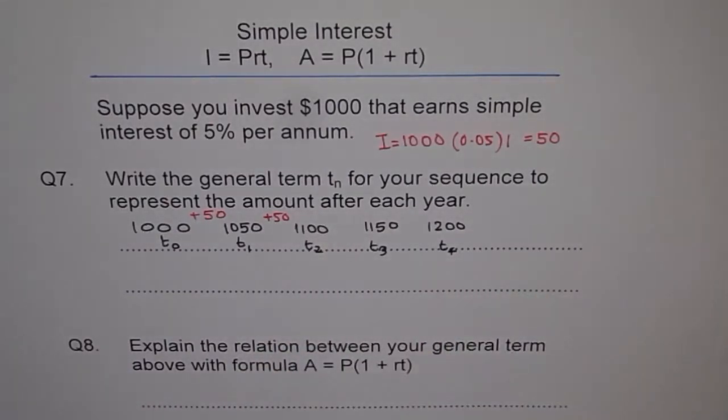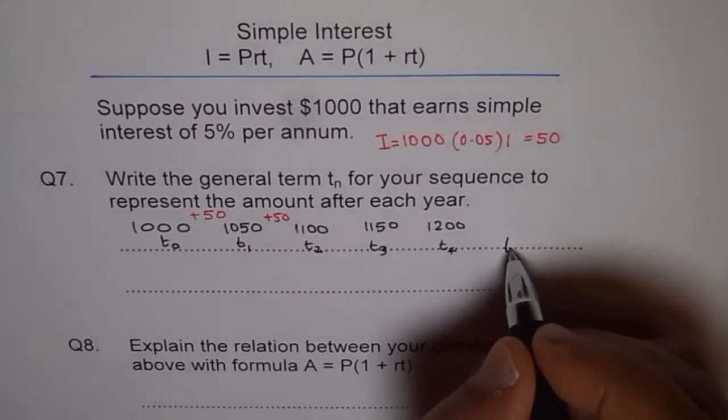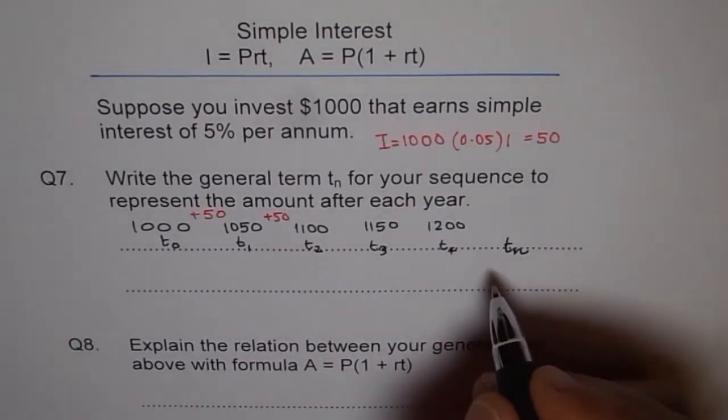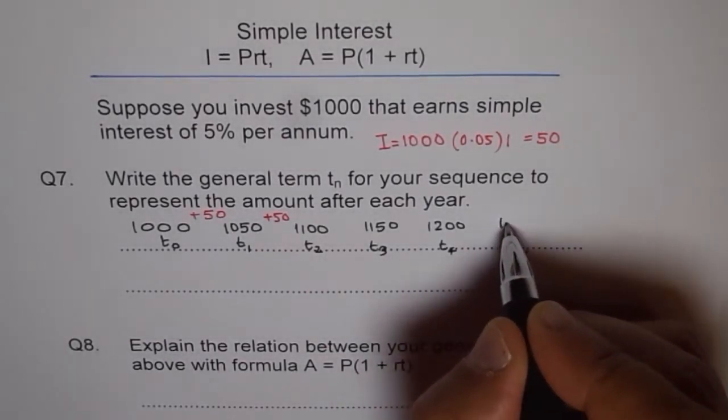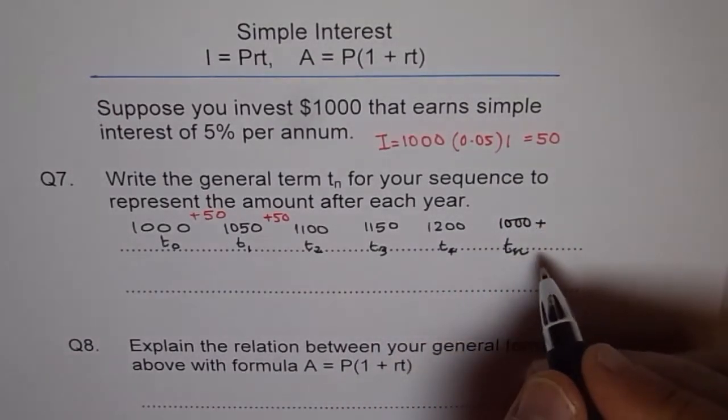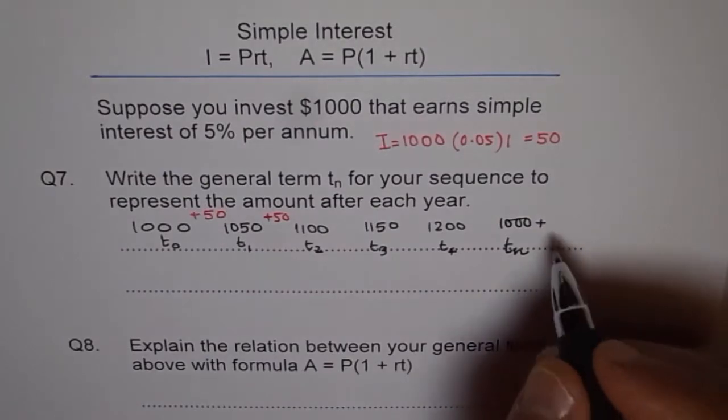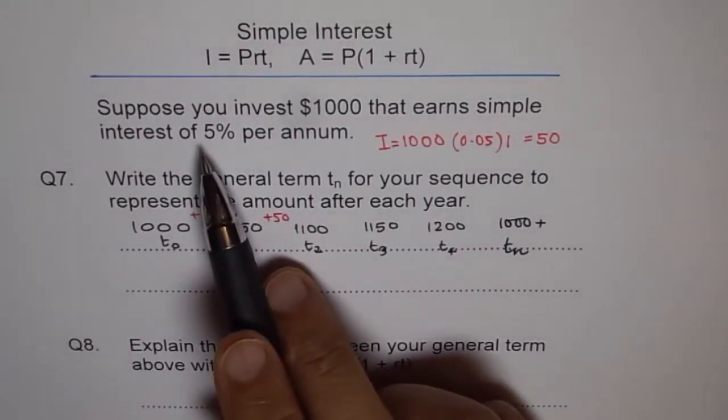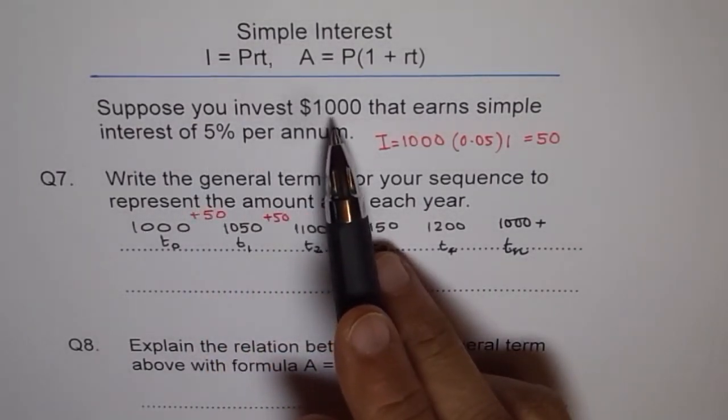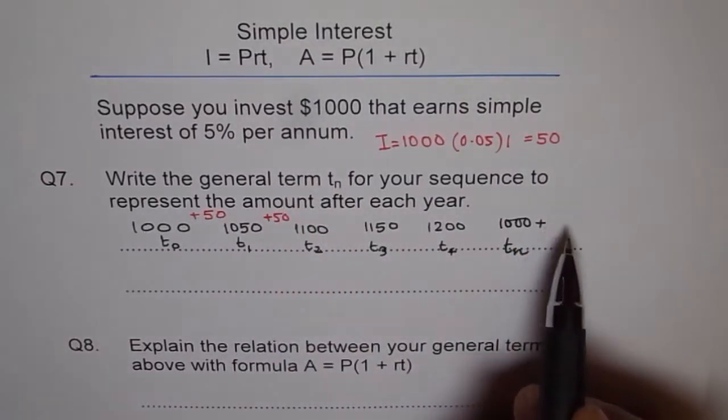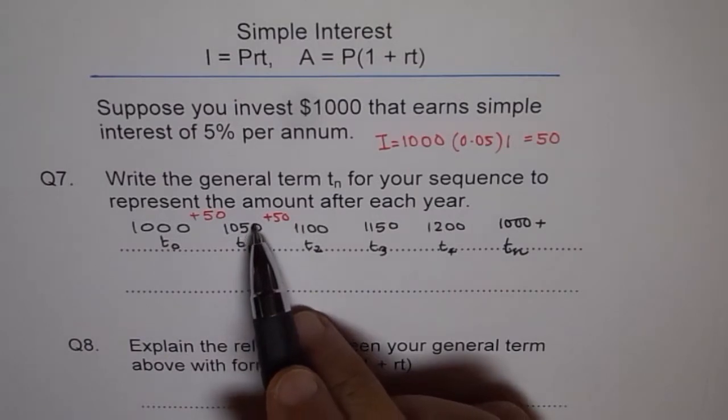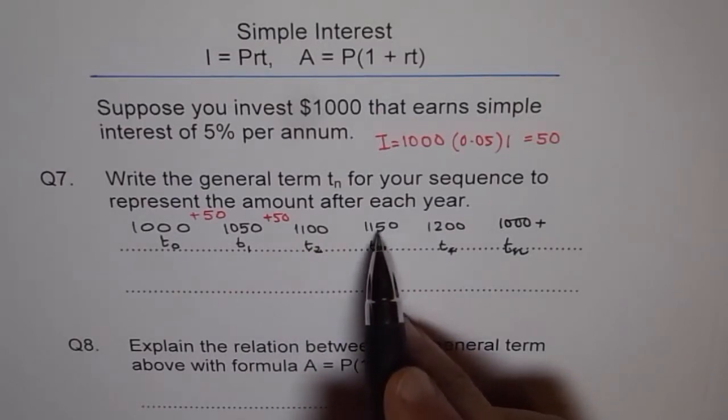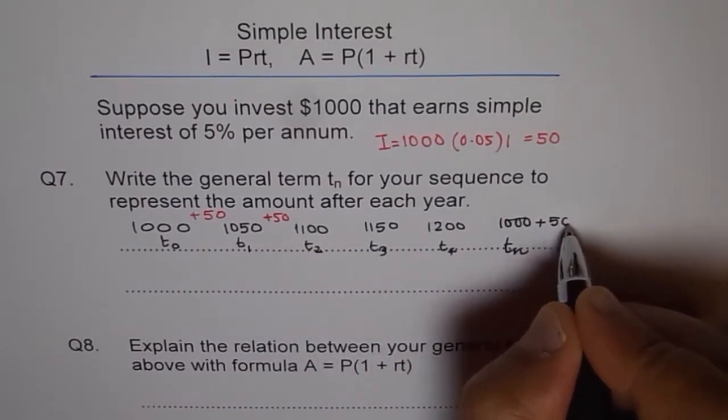Now can you tell me what is going to be our nth term, tn? With that kind of pattern going on, so what we see is that the initial amount is $1000. So tn could be 1000 plus every year we increase by $50. So we can write $50 or in the case of this equation, we can write 5% of $1000. I can write $50 also, plus 50t. Because it is 50 × 1, 50 × 2, 50 × 3 is 150. So first let me write this as 50t.